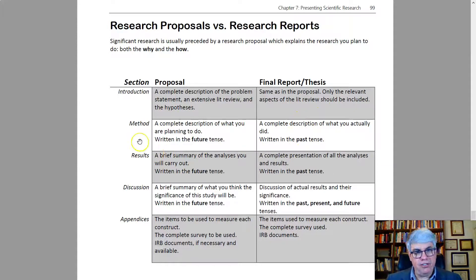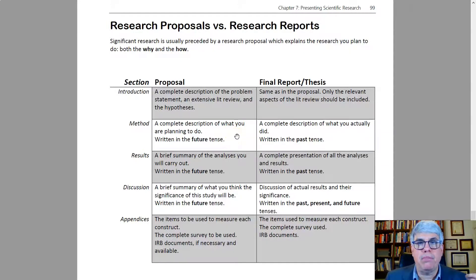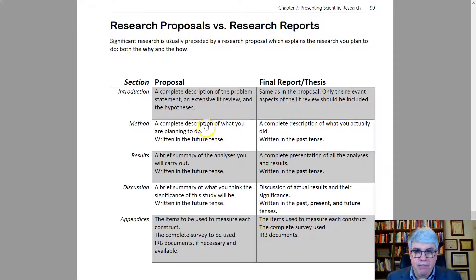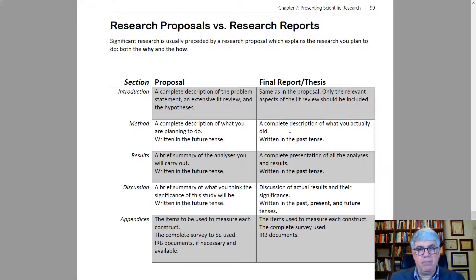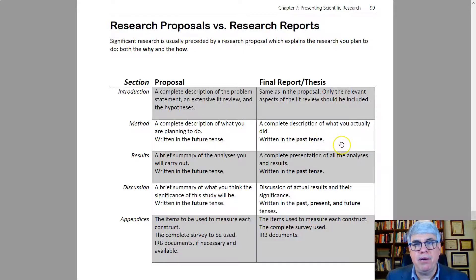The methods section in your proposal contains a complete description of what you are planning to do, and it's written in the future tense — several pages long with all the details. In your final thesis, this changes somewhat: it becomes a complete description of what you actually did, which might be pretty close to what you planned, but it is written in the past tense.